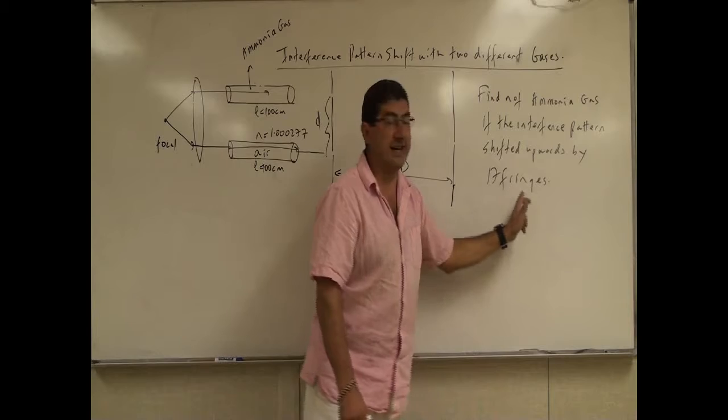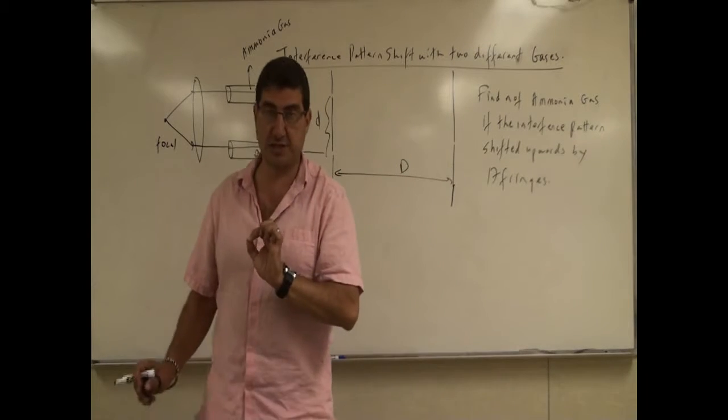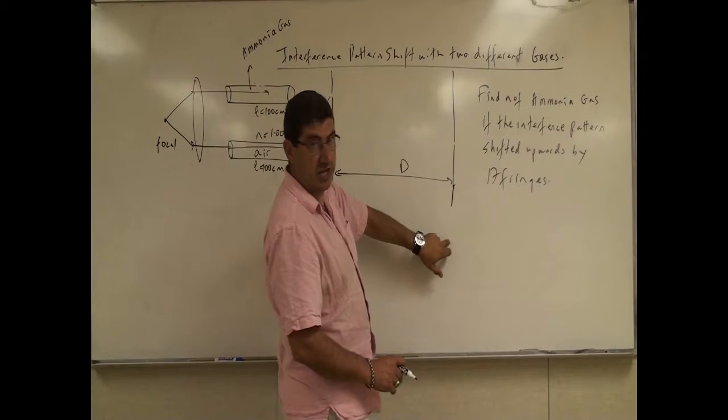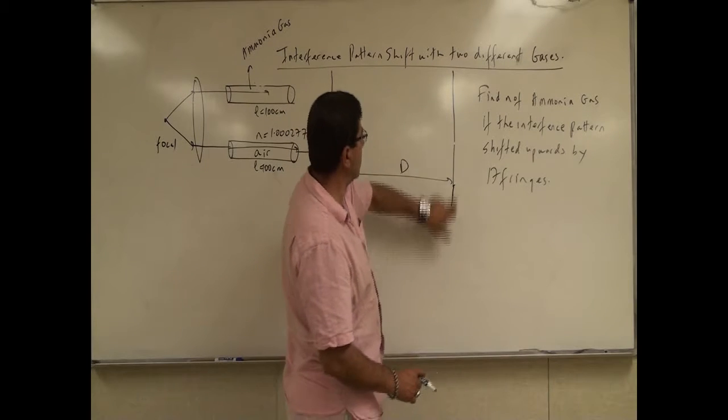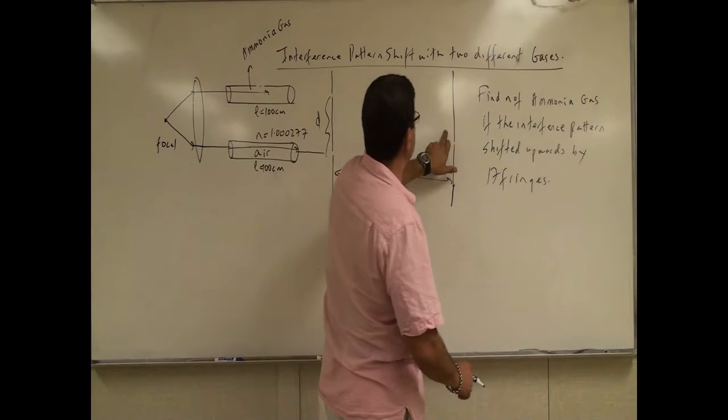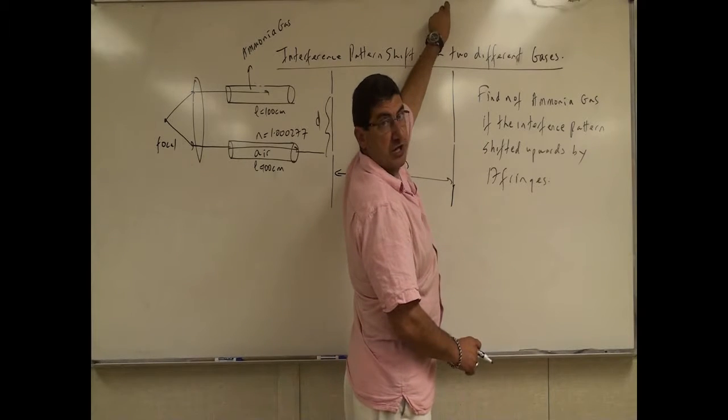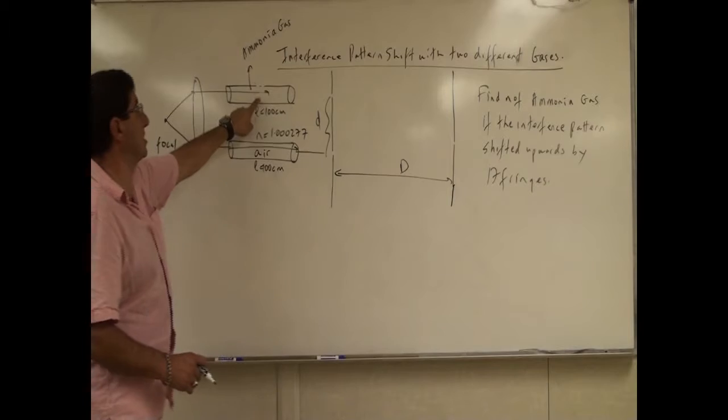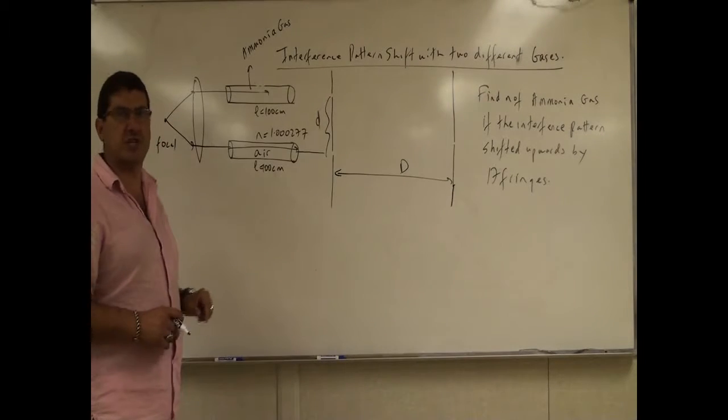Then they find out that the whole pattern shifts upwards. So the whole pattern shifts upwards by 17 complete fringes. So in other words, previously what had been the 17th bright fringe down here goes to the middle and then the central maximum goes 17 fringes up to the top. So that means the shift is towards the ammonia gas.